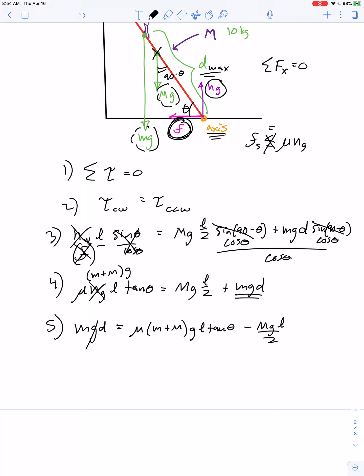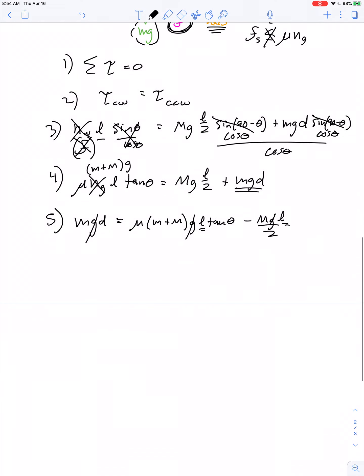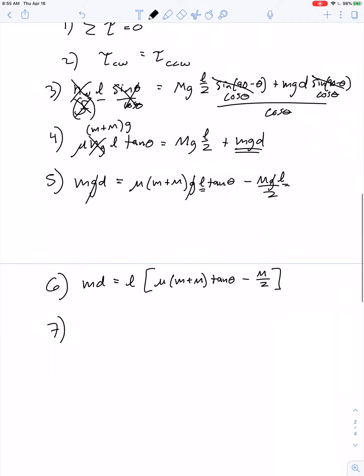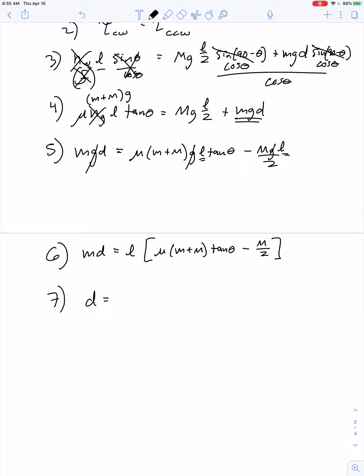We can factor out or cancel out the g and then factor out the L. So we have m times d equals L times the quantity μ(M plus m) tangent theta minus capital M over 2. We've got our algebraic solution: d equals L times [μ(M plus m) tangent theta minus capital M over 2] all divided by lowercase m.